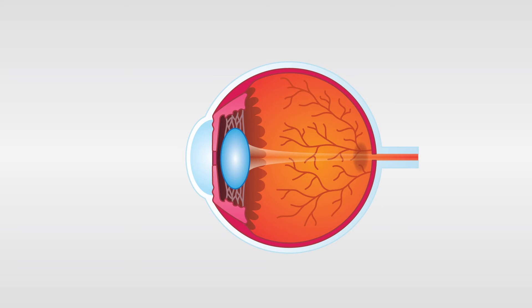Here you can see the anatomy of the human eye. Sclera: it is what surrounds the eye, giving it protection and support. Cornea: it is a transparent structure that covers the anterior sixth of the eye. The transition to the sclera is progressive.